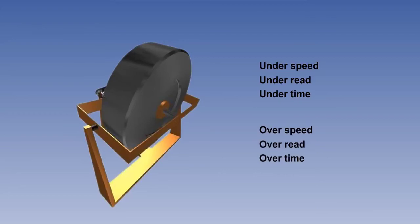On the other hand, if the gyro over-speeds, the opposite will apply, and the instrument will over-read the rate of turn. Therefore, the actual rate of turn will be less than indicated.